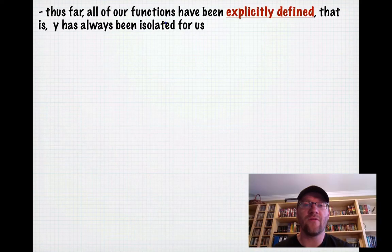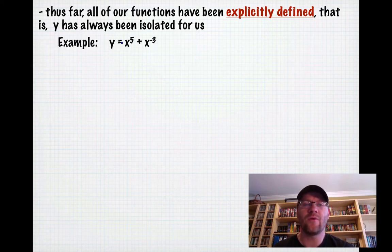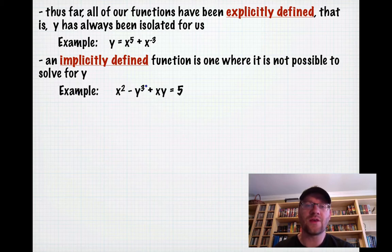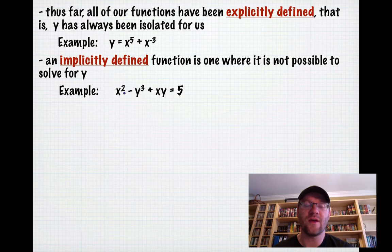Thus far, all of our functions have been explicitly defined. That is, y has always been isolated for us. For example, when y equals x to the fifth power plus x to the negative three, we know that we've isolated y already. But an implicitly defined function is one where it's not possible to solve for y. So in this case, since we have a y cubed here and a y here, it would be basically impossible for us to just get y by itself on one side.